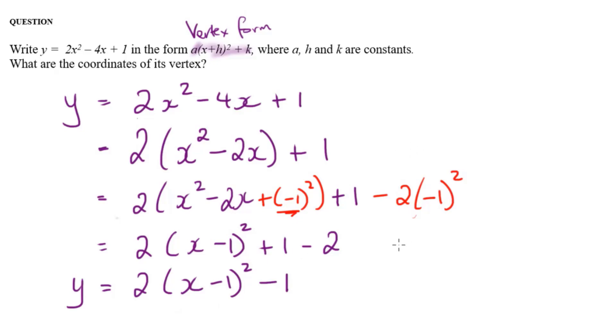So based on that, that means the coordinates of the vertex will be equal to the value that is going to make the squared term zero. In other words, the opposite of minus 1, which is 1, and the constant, which is minus 1. Let's look at the second one.